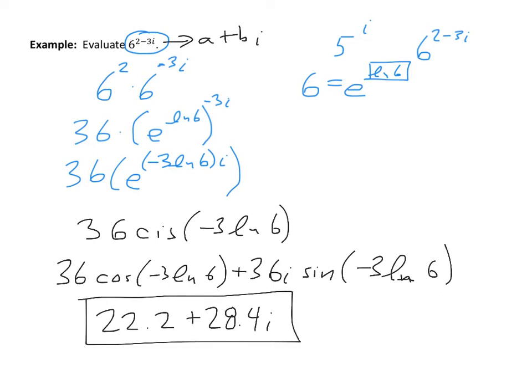And then if I want to convert this into a plus bi form, I take this and expand it: 36·cosine(negative 3·natural log 6) plus 36i·sine(negative 3·natural log 6). Using a calculator, this gives approximately 22.2 plus 28.4i. And you can confirm this on your calculator by just doing 6 to the 2 minus 3i directly.